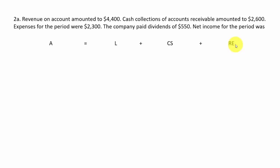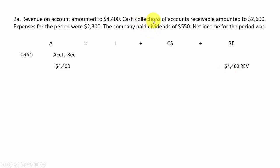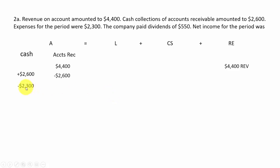Here's our accounting equation. Revenue on account amounted to $4,400 — that increases accounts receivable and also increases retained earnings on the other side, so both sides went up $4,400. Cash collections of accounts receivable amounted to $2,600 — cash goes up $2,600 on the asset side and accounts receivable goes down $2,600. Overall this side nothing really changed; we just traded our accounts receivable for cash, which is a good deal every time.